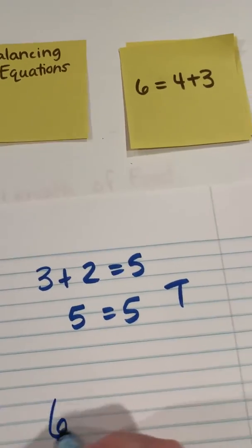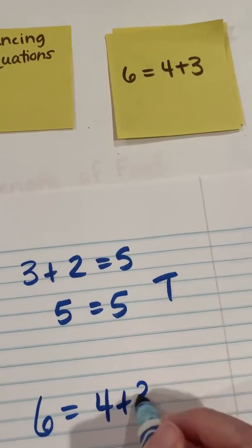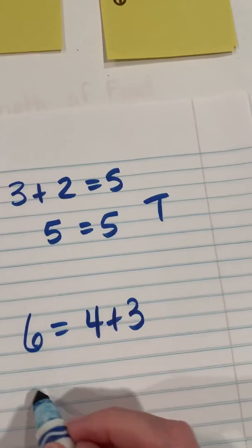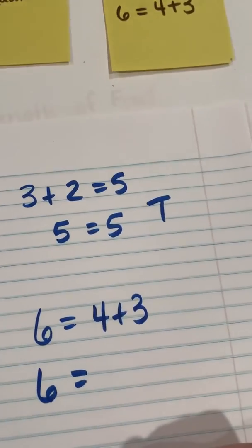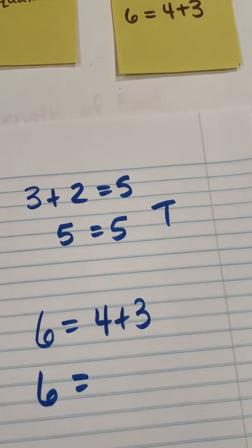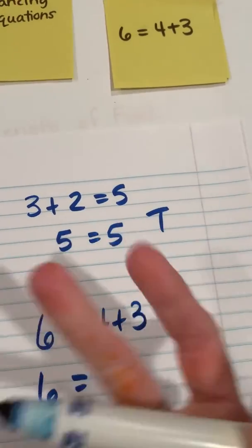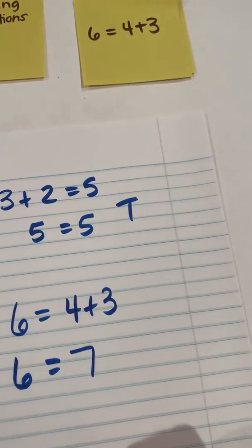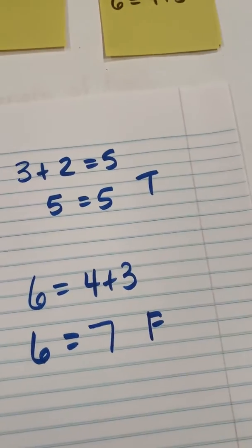Now I have 6 equals 4 plus 3. So I have 6, and then I know that 4 plus 3 is 7, or I'm going to count up in my head. I put 4 in my head and I count up 3: 5, 6, 7. And then I can look at that and I can know that's not true. That's going to be false.